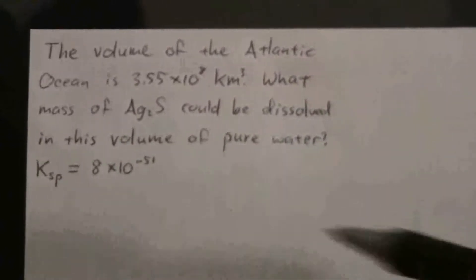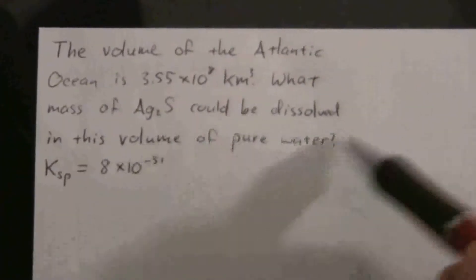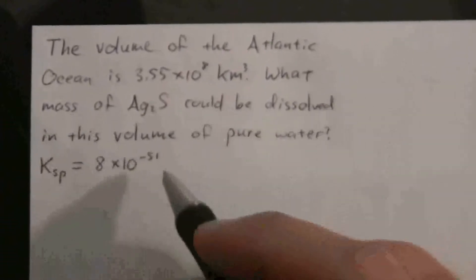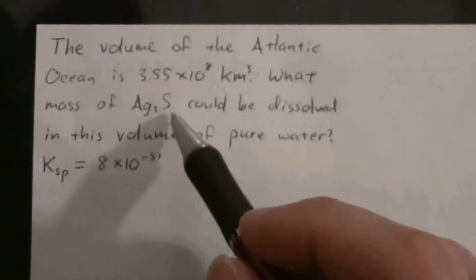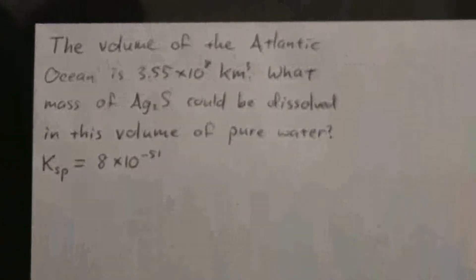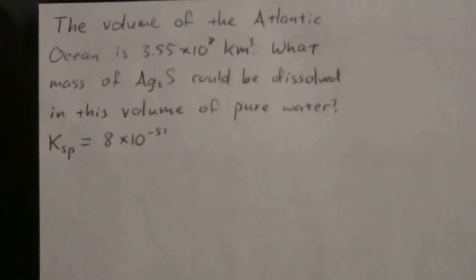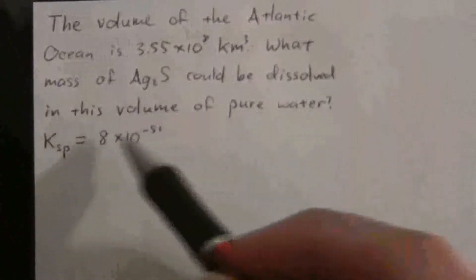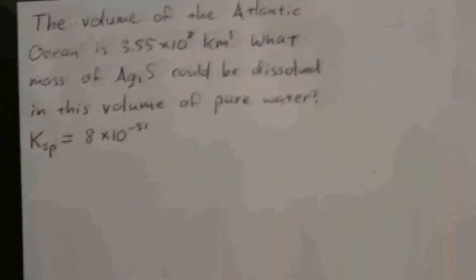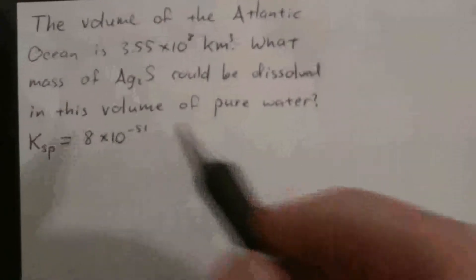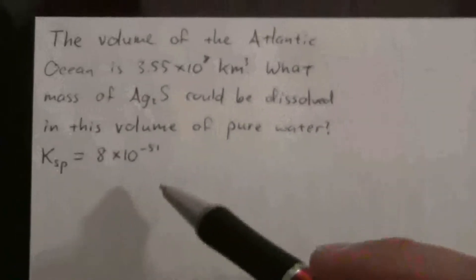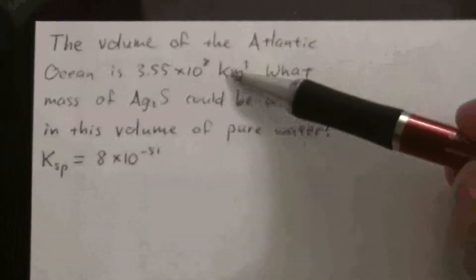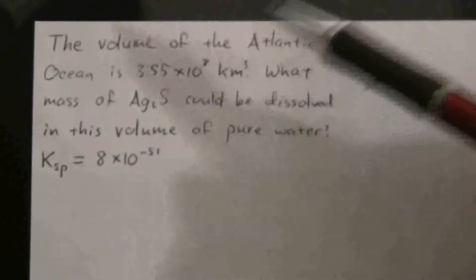We're assuming we have a volume the size of the Atlantic Ocean but it's pure water, and we're given the Ksp for the silver sulfide. We want to know how much of this could be dissolved in that ocean. Here we have an insoluble compound. It's actually quite insoluble as indicated by the very small Ksp, and we want to know what mass could be dissolved in this volume.